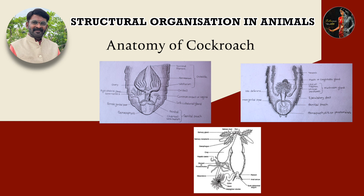The female reproductive system consists of 2 large ovaries lying laterally in the 2nd to 6th abdominal segments. Each ovary is formed of a group of 8 ovarian tubules containing a chain of developing ova. The oviduct of each ovary unites into a single median oviduct called the vagina, which opens into the genital chamber. A pair of spermathecae is present in the 6th segment, opening into the genital chamber.